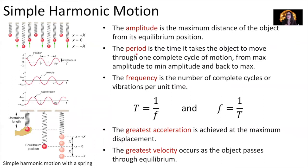Then we have something called the period. The period is the time it takes the object to move through one complete cycle of motion — from maximum amplitude through minimum amplitude and back to maximum amplitude again.